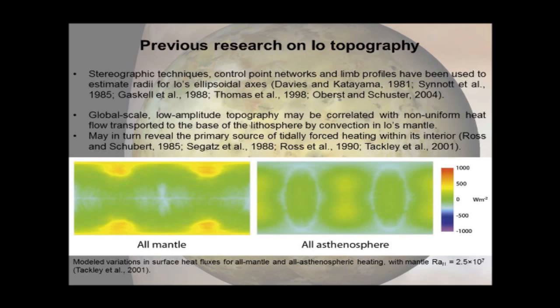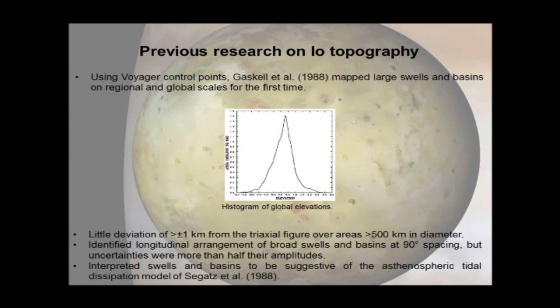This figure from Tackley's 2001 study on modelling convection within IO shows two end-member scenarios: on the left, all heating is concentrated in the mantle; on the right, all heating is in the asthenosphere. By knowing IO's long-wavelength topography, we may be able to get some idea of its internal heating, and perhaps compare this with Karana's study deducing a layer of global melting several tens of kilometres below the surface.